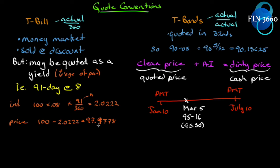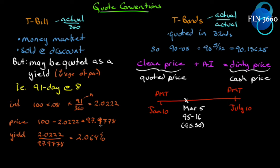Our true yield is $2.0222 divided by the price paid of $97.9778, giving 2.064% — not 2.022%. We knew it would be higher because the quoted yield is as a percentage of par, but we're paying less than par. Is there a way to relate the quoted yield of 8% with the price of $97.9778? Yes: the formula is y = (100 − Price) × (360/n) / 100.